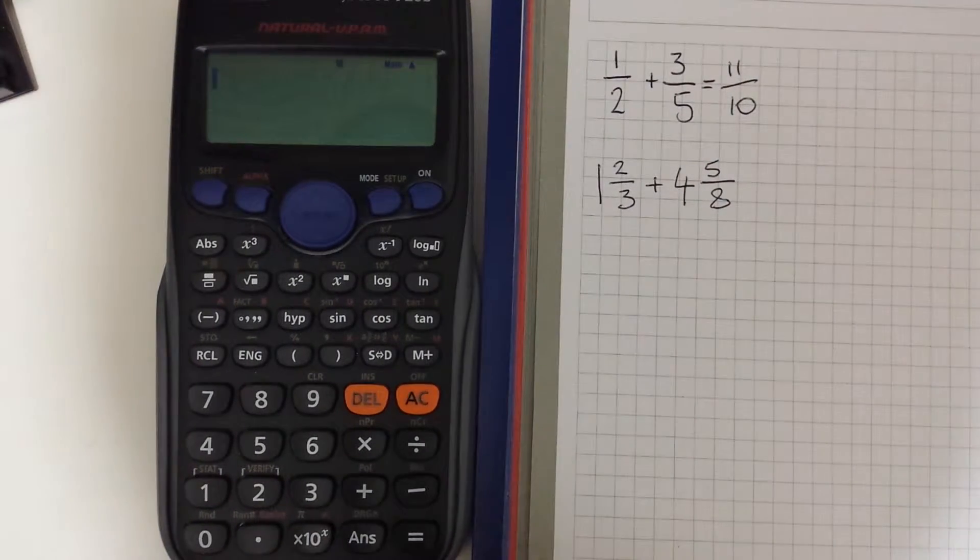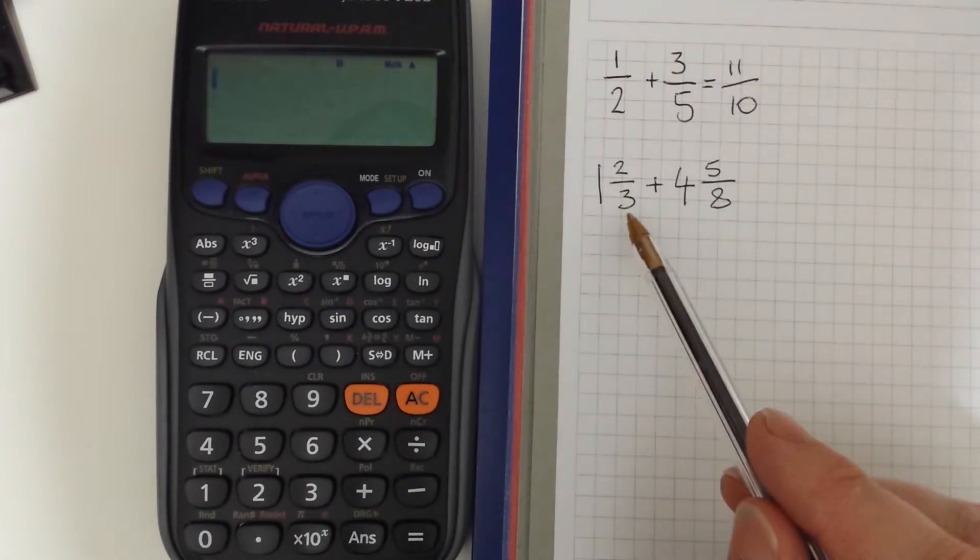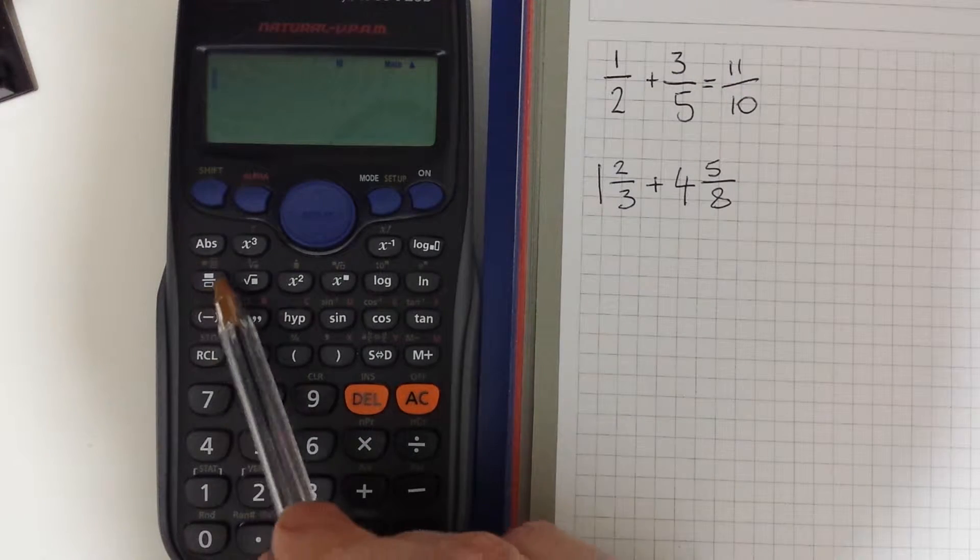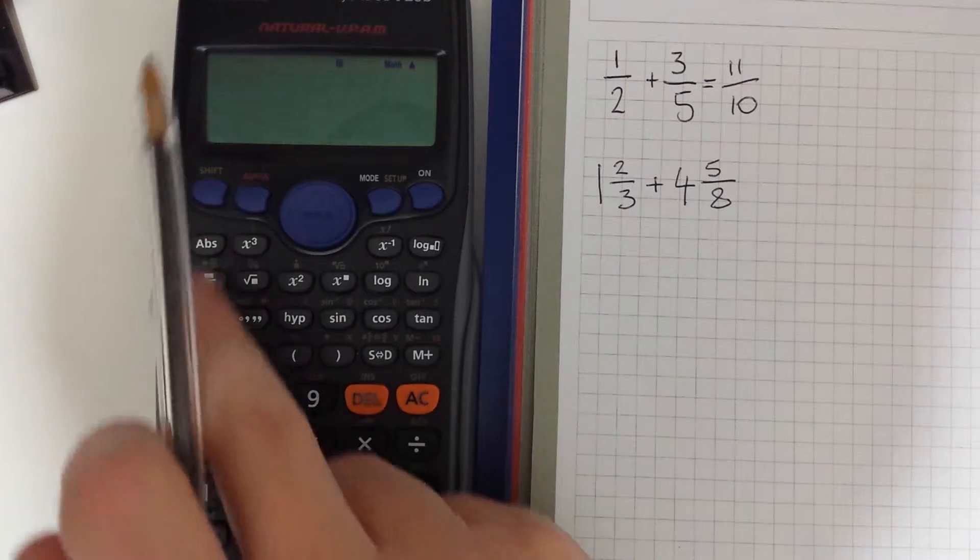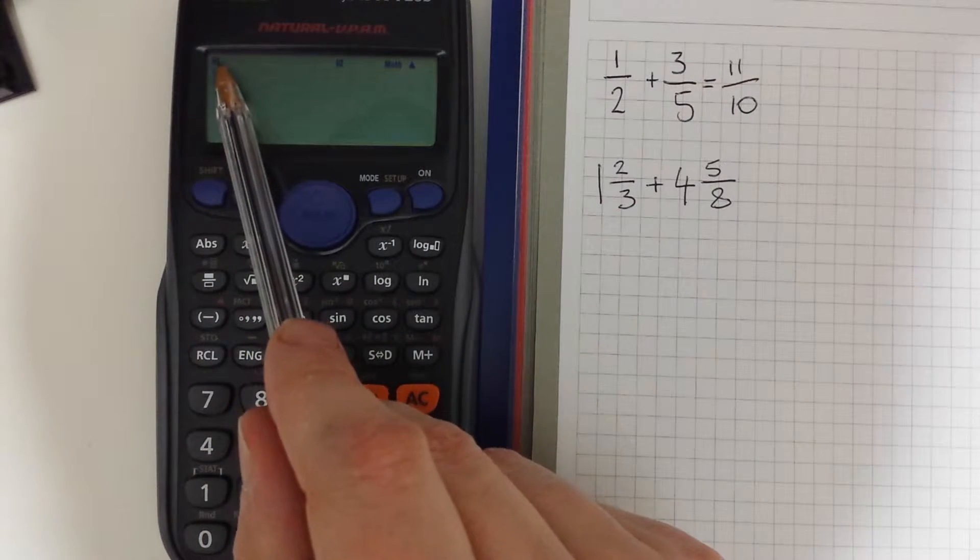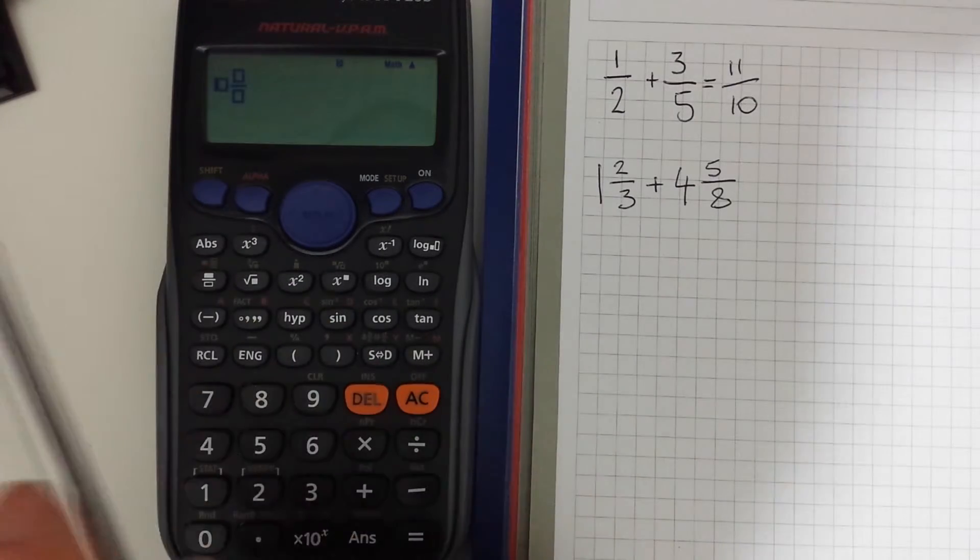So this time we need to enter a mixed number fraction. So to do that we use the fraction key, but first we have to press shift. So the little s will appear in the top corner to say that it's in shift mode and then the fraction key.